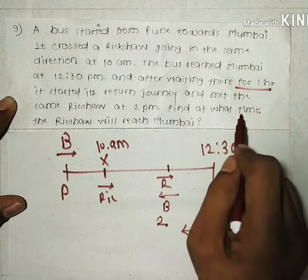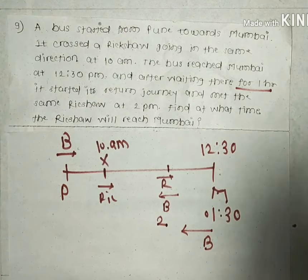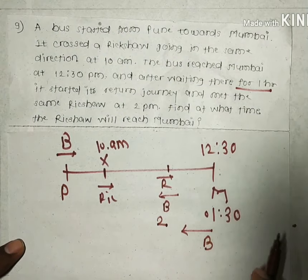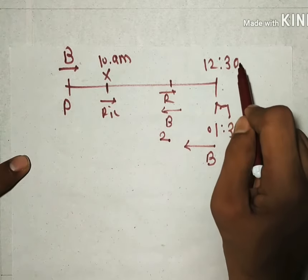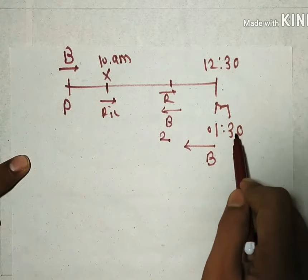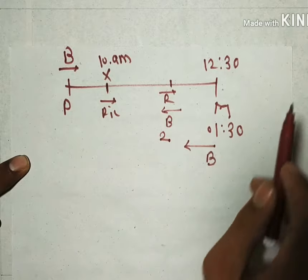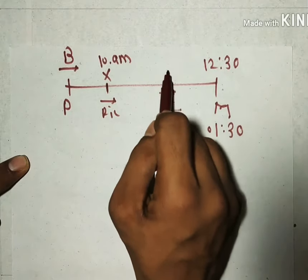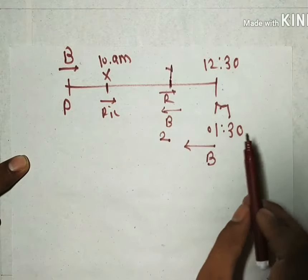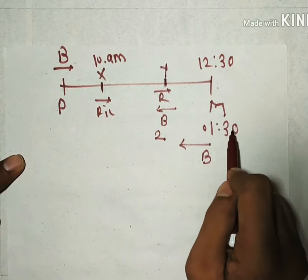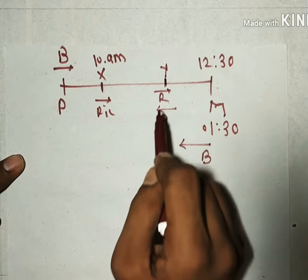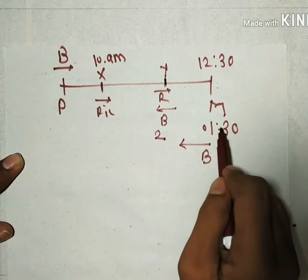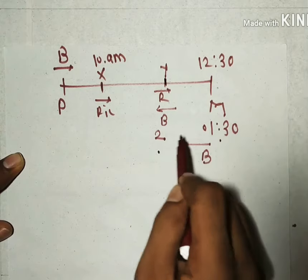Find at what time the rickshaw will reach Mumbai. We have to calculate that time. The bus reached Mumbai at 12:30pm, waited one hour, and started its return journey at 1:30pm. At 2pm, the bus reached the point where the rickshaw was going towards Mumbai — I'll call this point Y. From Mumbai to point Y, the bus needed 30 minutes.